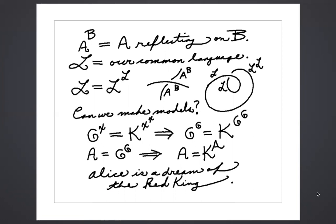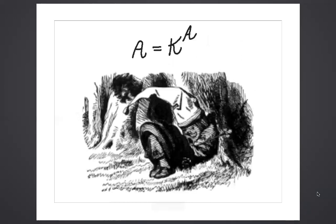So if we let Alice be g reflecting on the king reflecting on himself, then Alice is equal to the king reflecting on Alice. Alice is a fixed point of the king. Alice is a dream of the red king. The apparent nonsense of Lewis Carroll becomes theorems in the reflexive language.